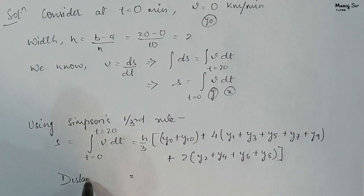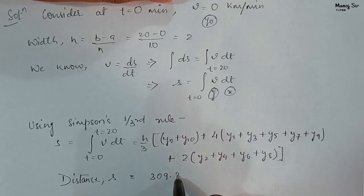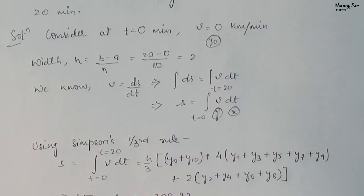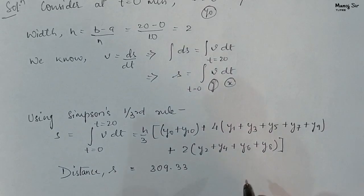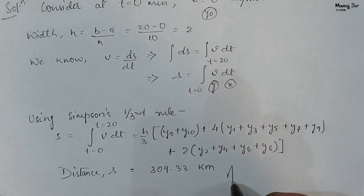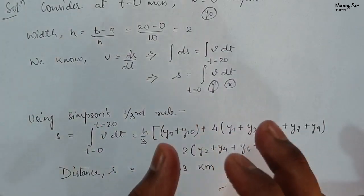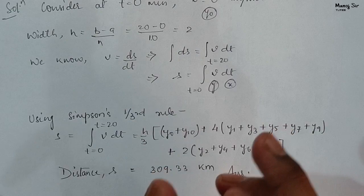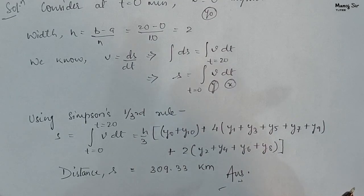On substituting all values and calculating, the distance s equals 309.33 kilometers. The unit is kilometers because velocity was in kilometers per minute and time in minutes. This is the final answer. I would request you to watch video number 1 first to get a clear idea of how to use Simpson's one-third rule, Simpson's three-eighths rule, and Weddle's rule, remembering that Simpson's one-third rule is given priority over other methods. Thank you.